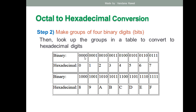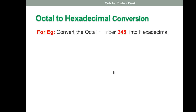In the binary-to-hexadecimal table, four bits of all zeros is equivalent to hexadecimal zero, and 0001 is equivalent to one, and so on up to F. If you are confused about how this table works, check the previous video on hexadecimal-to-octal conversion where it is explained in detail. You just need to learn this table to perform the conversion.